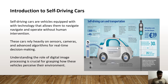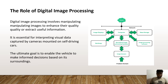This is the main block diagram showing the self-driving cars and transport. It is essential for interpreting visual data captured by cameras mounted on self-driving cars. The ultimate goal is to enable the vehicle to make informed decisions based on its surroundings.